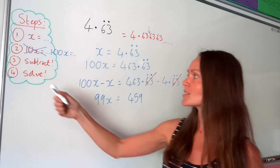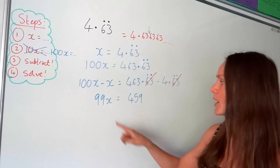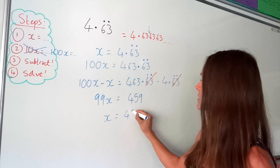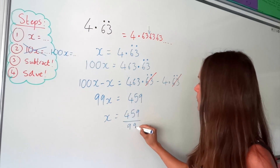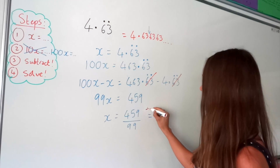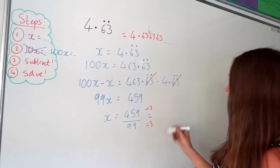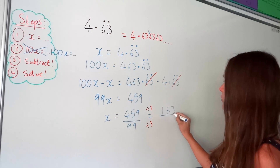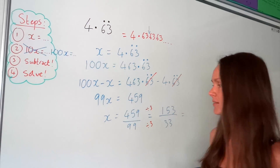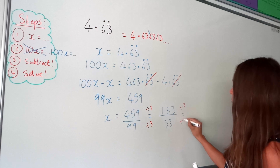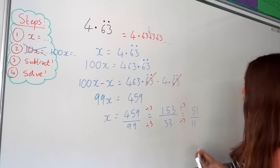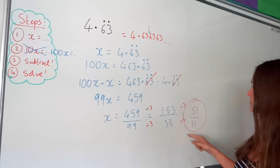The last step is to solve the equation, so I divide by 99 on both sides, giving me the fraction 459 over 99. I can simplify this fraction — I can divide both the numerator and denominator by 3, giving 153 over 33. And I can divide by 3 again, since 3 is a common factor in both. That leaves me with 51 over 11, which is the final fraction in its simplified form.